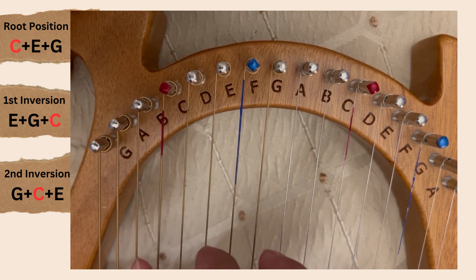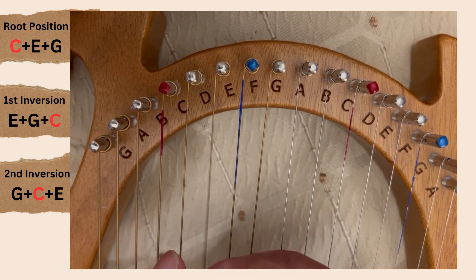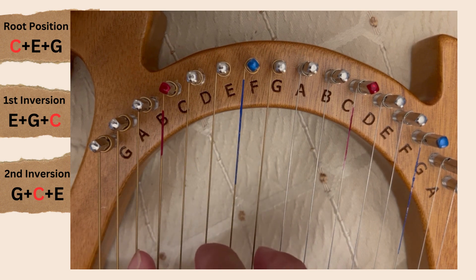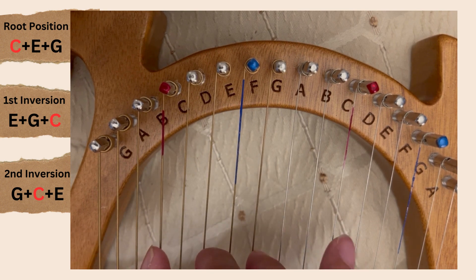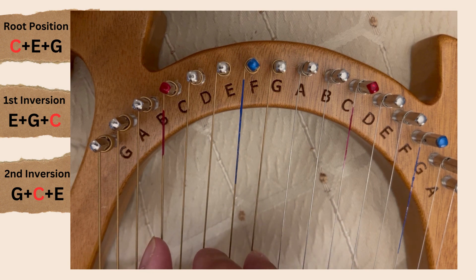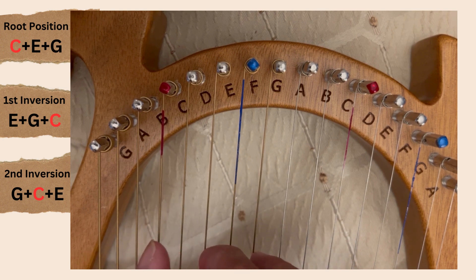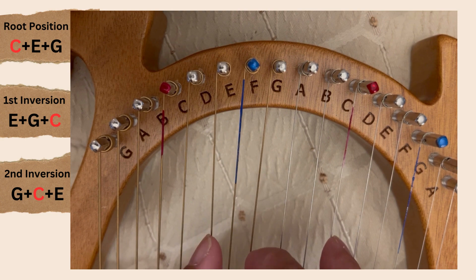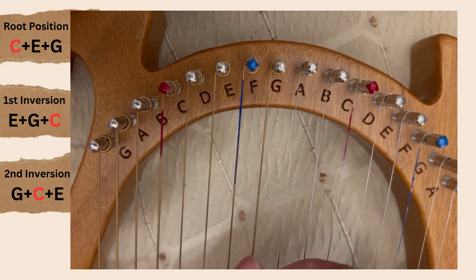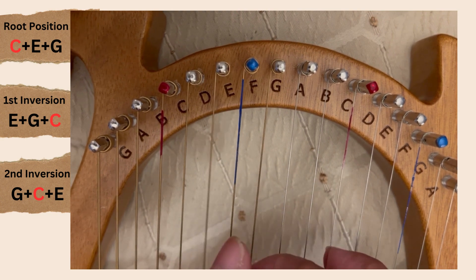You can invert the chords, which means we're going to take the bottom note and we're going to put that up the top. So right now the bottom note is C, and if we put that at top, our pattern now becomes E, G, C. That's our first inversion.